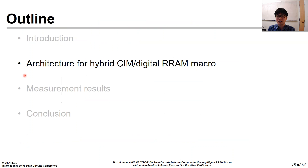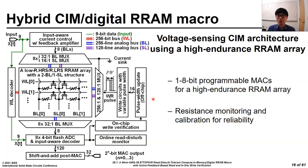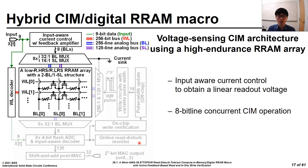I will explain the architecture for hybrid CIM and digital RRAM macro. This slide shows the top block diagram of the proposed hybrid CIM and digital RRAM macro. The proposed RRAM macro supports voltage sensing CIM using a high-endurance RRAM array. With hybrid CIM and a digital MAC operation, 1-bit to 8-bit programmable MAC is supported under a low on-off ratio. To secure reliable resistances, iterative write-width verification and online read-disturb detector are employed. In CIM operations, the input is fed to the wordline decoder and the input-aware current control.